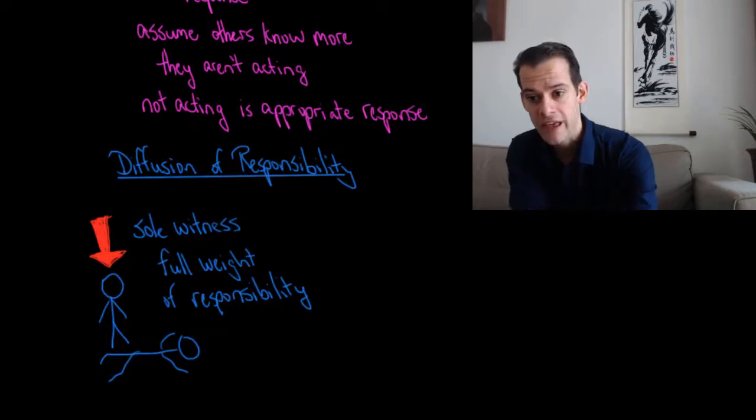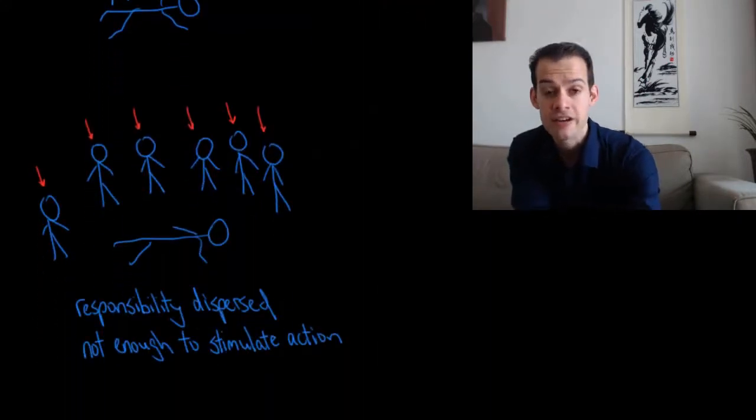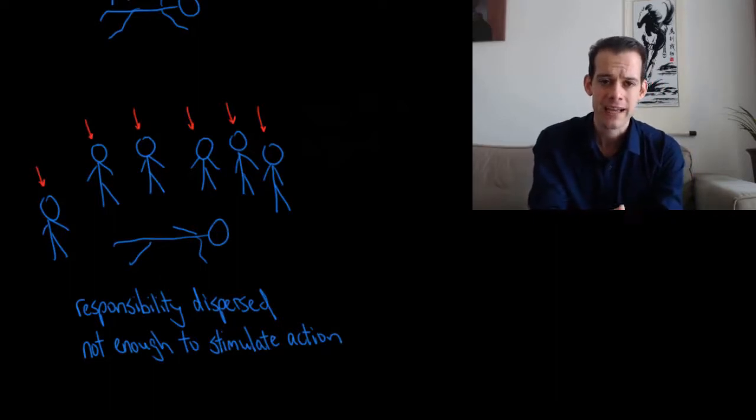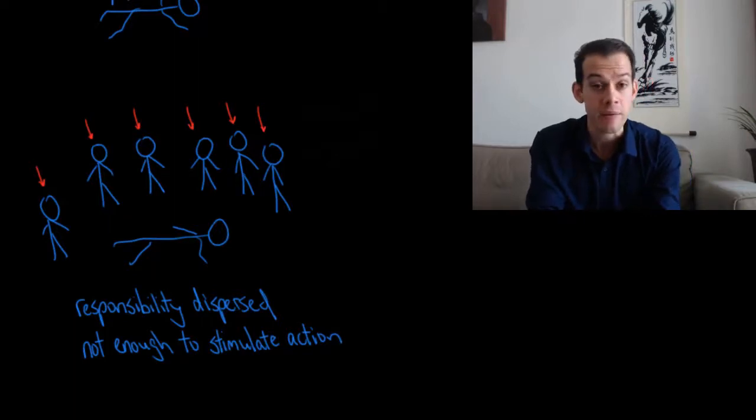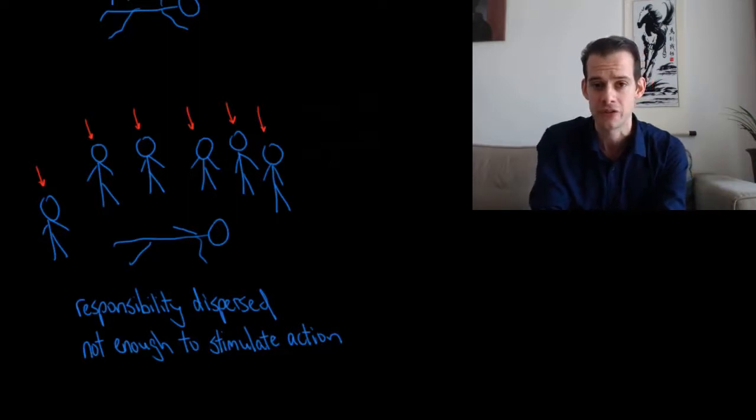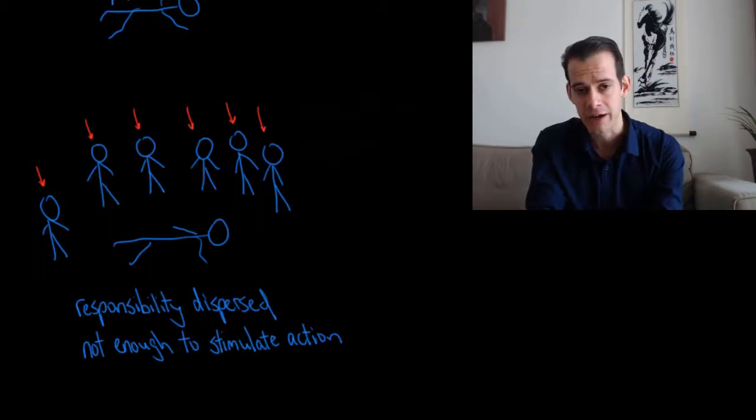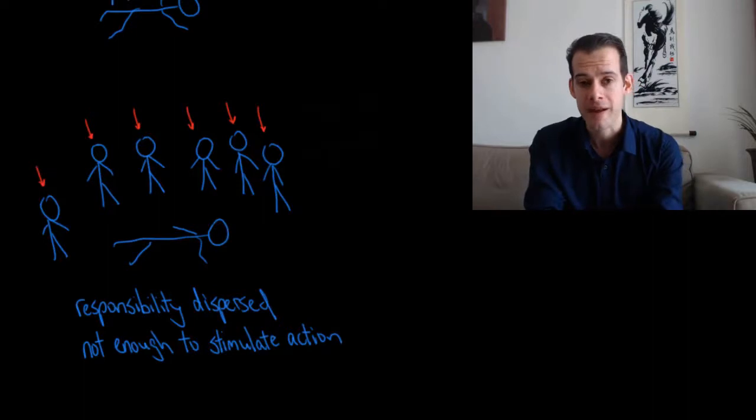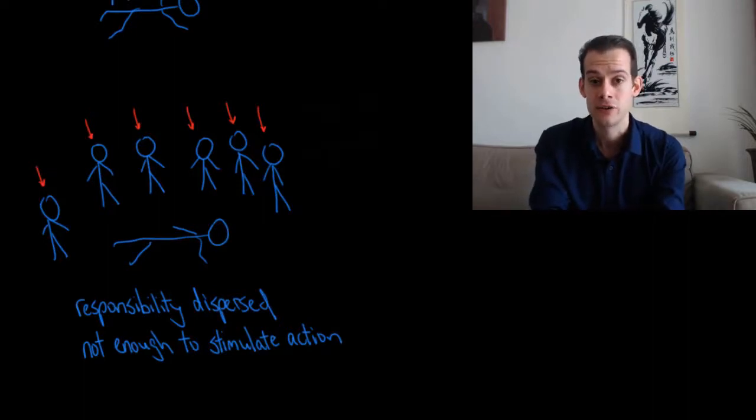If this same event occurs, and then I look around and see that there are five or six other witnesses, well, now the sense of responsibility to help is spread out. It's diffused or dispersed amongst the crowd. We each feel a little bit of responsibility to help. We feel like we should do something, but we also feel like those other people should do something. Somebody should do something, but it's not enough sense of responsibility on each of us to stimulate us to act. So we feel a little bit of pressure that we should help, but we don't feel enough to actually do something. Whereas if we were alone, we would feel the full weight of responsibility, and we'd be much more likely to get involved.